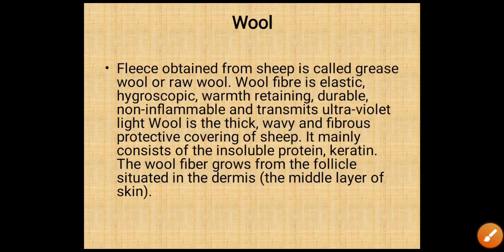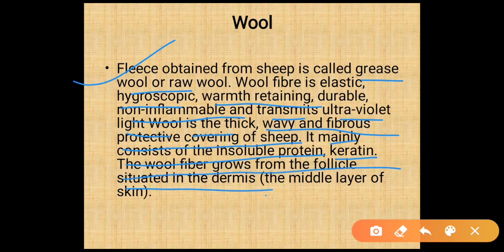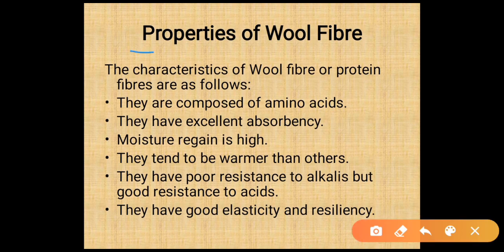Wool fleece obtained from a sheep is called greasy wool or raw wool. A wool fiber is elastic, hygroscopic, warm, durable, non-inflammable, and transmits ultraviolet light. Wool is thick, wavy, fibrous, and is the protective covering of a sheep. It mainly consists of insoluble proteins called keratins. The wool fiber grows from the follicle situated in the dermis, the middle layer of the skin.